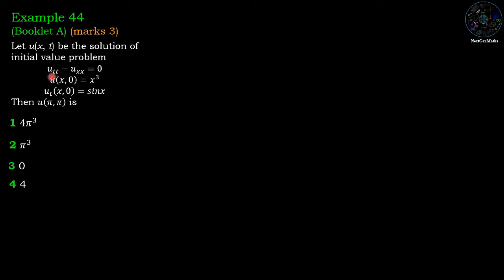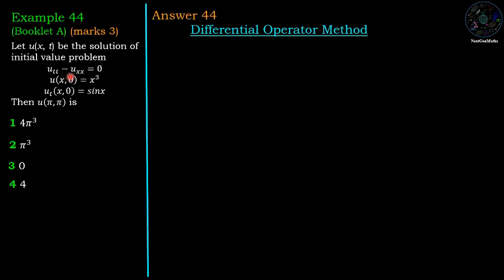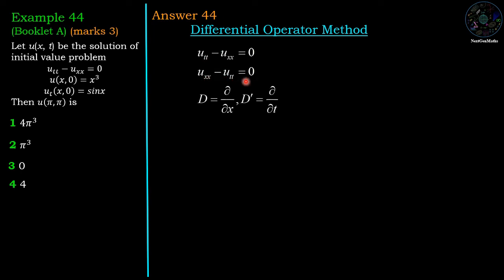Here we are going to discuss the solution method of partial differential equations using the differential operator method. For simplicity, we can write the differential equation in the form u_xx minus u_tt equals 0. Differential operator D represents the partial derivative with respect to x, and D' represents the partial derivative with respect to t. The PDE can then be written as (D² minus D'²)u equals 0.